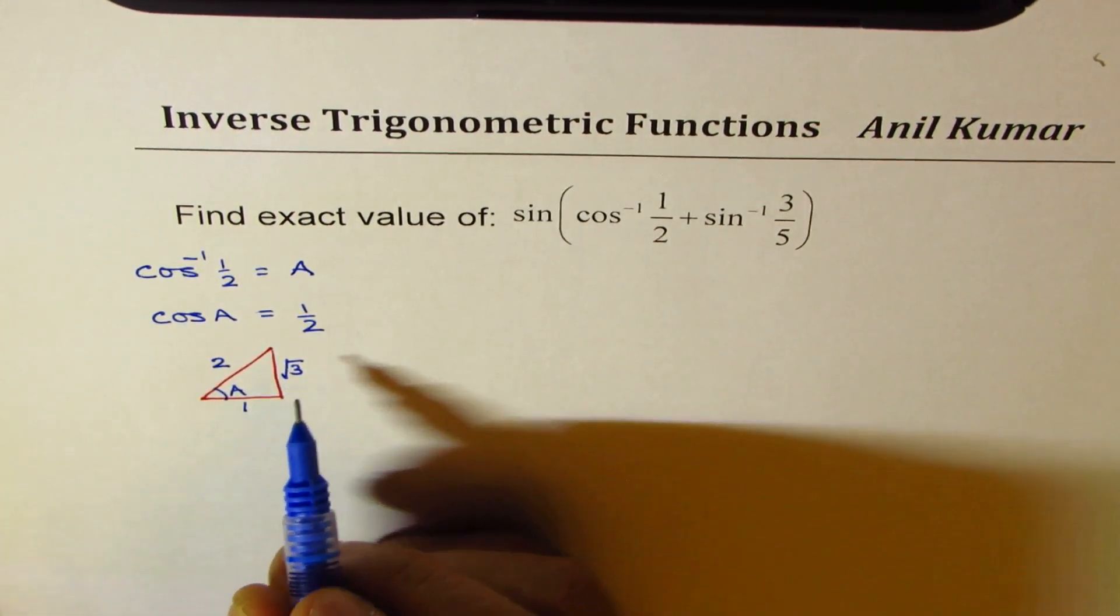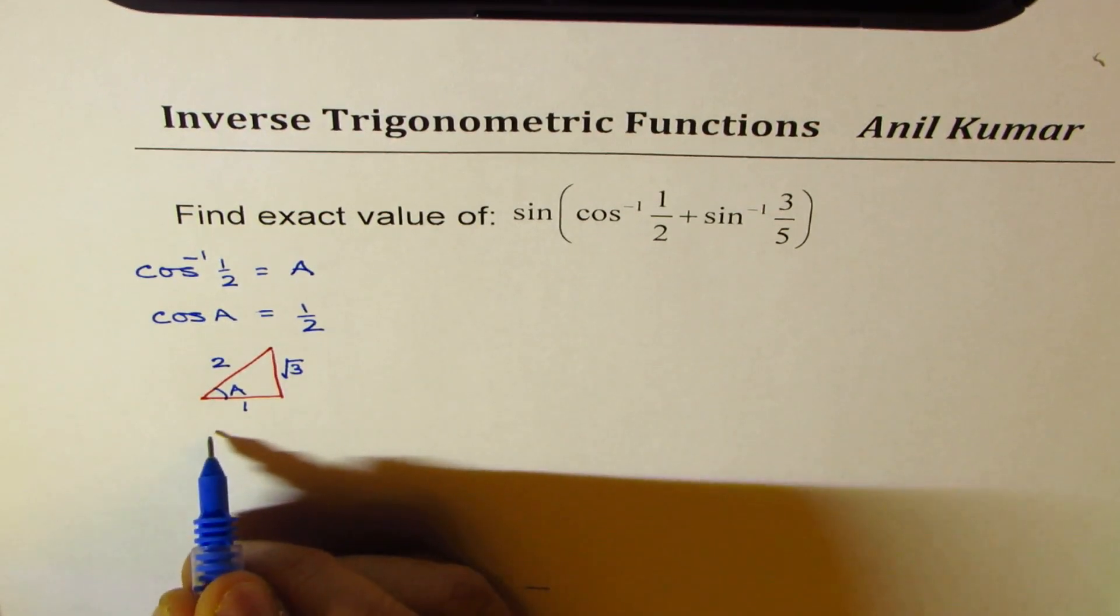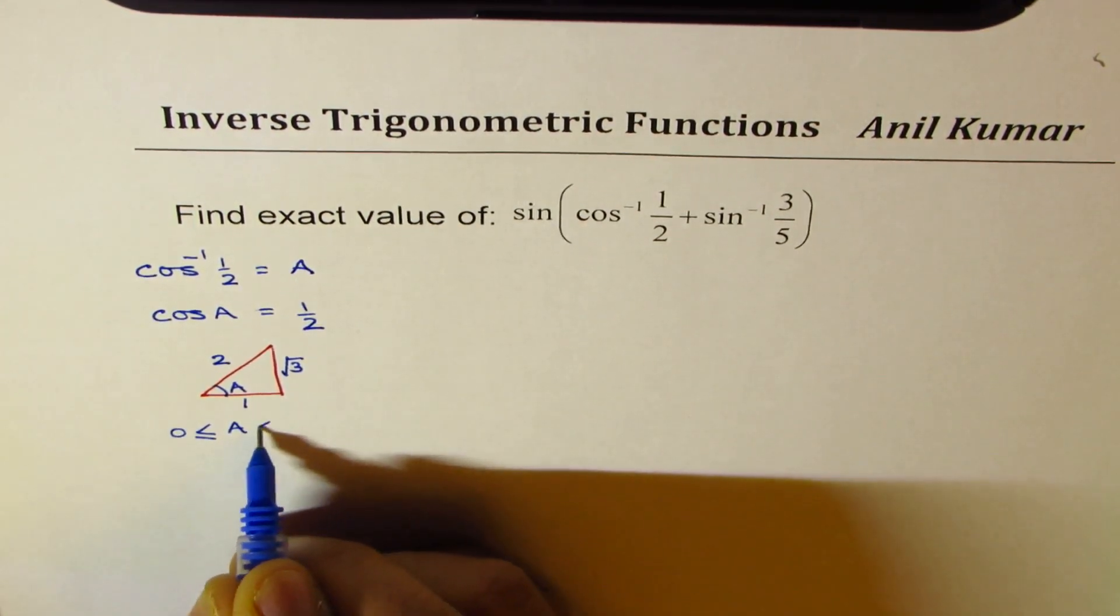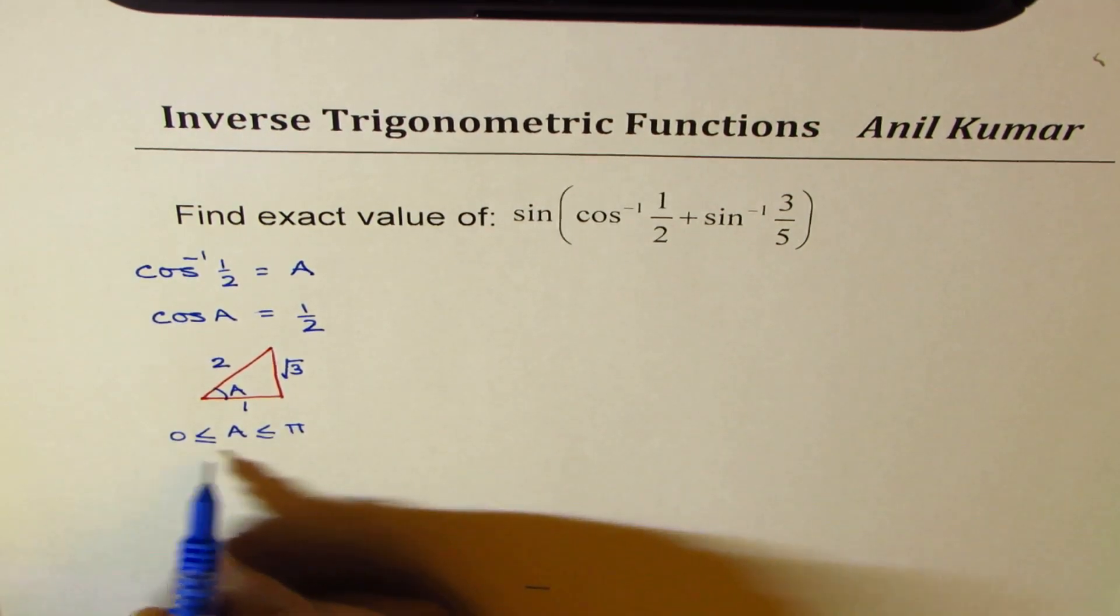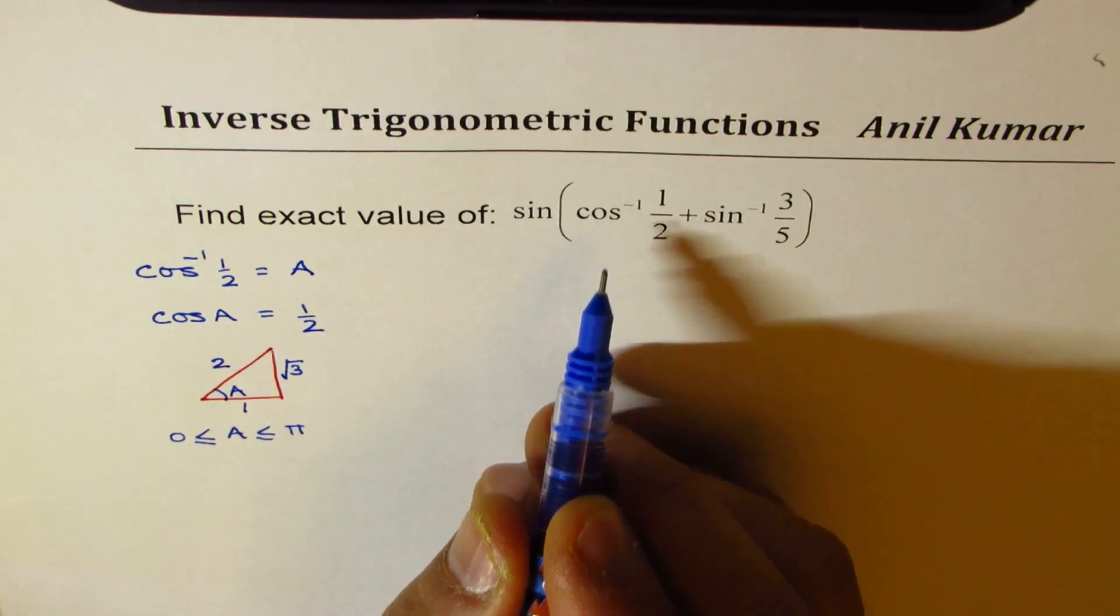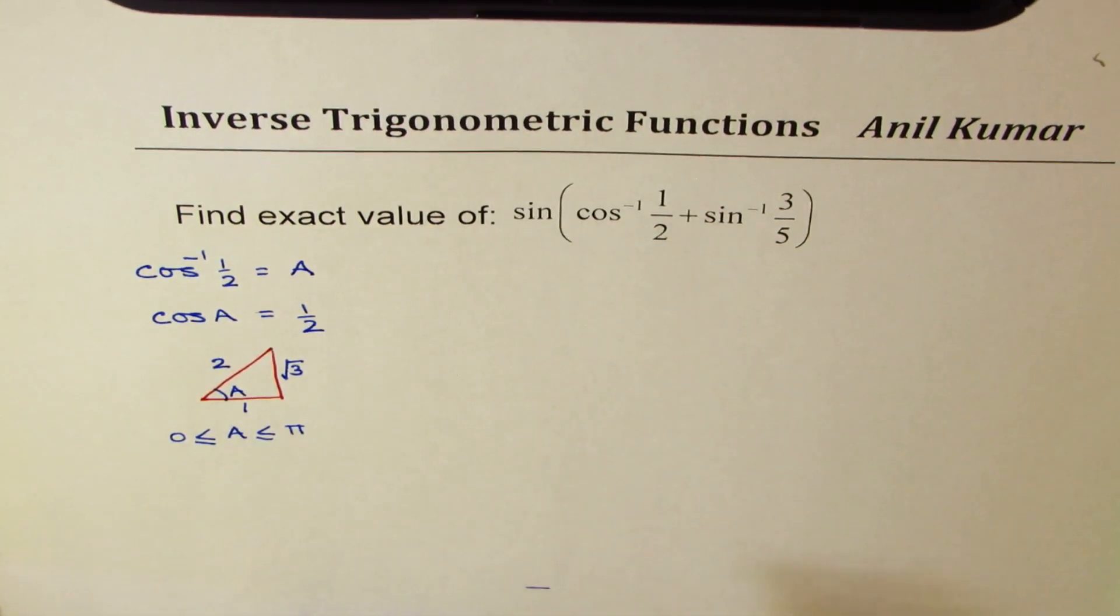Also remember one thing that A has to be an angle between 0 to pi, because only in this interval, cos inverse will be a function. That is important to understand.